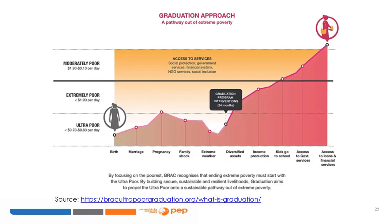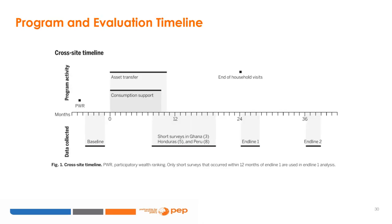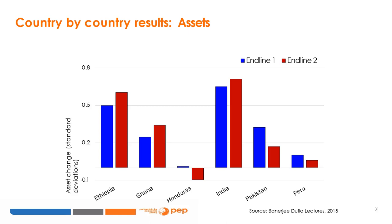In their paper in Science, Banerjee, Duflo, and others present results from six randomized control trials of this integrated graduation approach aimed at improving livelihoods among the very poor. The approach combines the six elements described and focuses on women in ultra-poor households. The timeline of the program and evaluation includes a baseline data collection, an asset transfer and consumption support period, and data collection at intermediate and end-line points.